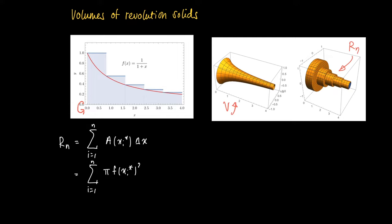The radius of the cylinder is basically the function value in one of the sample points. So the area function now is just the area of a circle: π times f(x*)² times Δx.